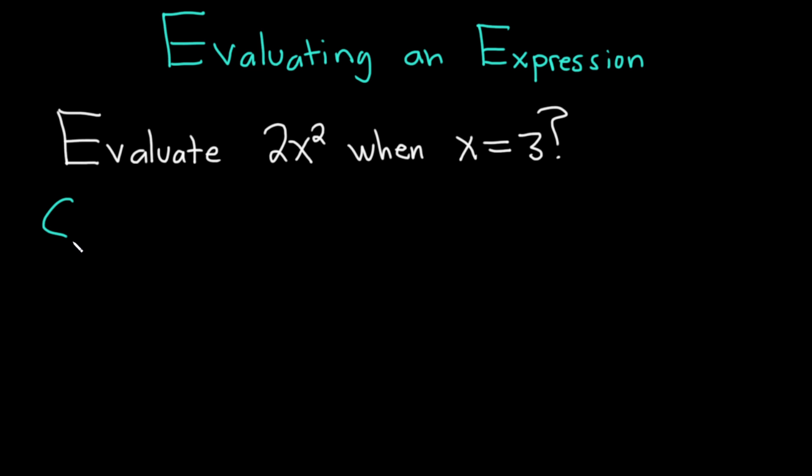Let's go ahead and work through it. Solution. We have 2x squared and need to plug in a 3 for the x. So if we do that, we get 2 times 3 squared.